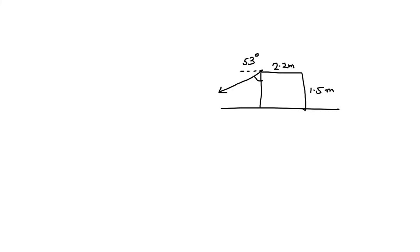Hello and welcome to this video solution. Here, a worker wants to turn over a uniform 1250 Newton rectangular crate by pulling it at an angle of 53 degrees on one of its vertical sides. The floor is rough enough to prevent the crate from slipping.